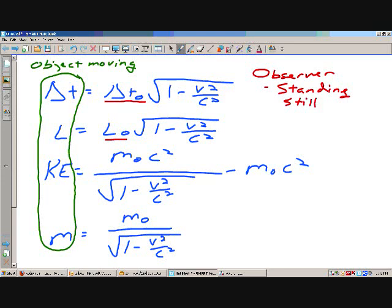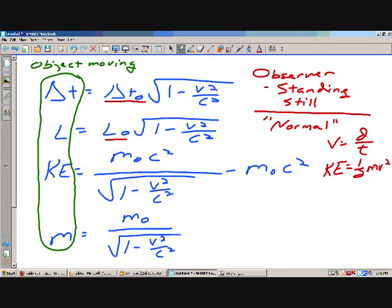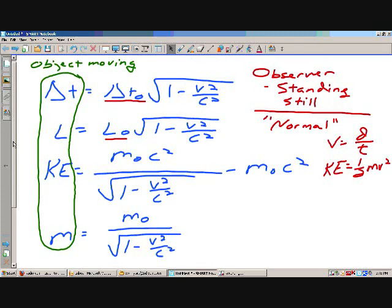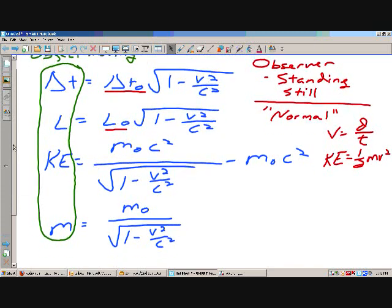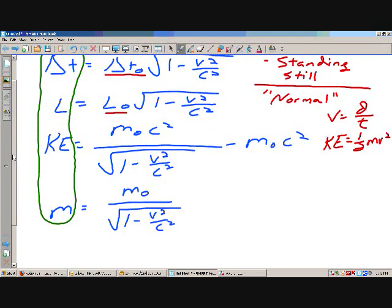Now, for the observer, keep in mind that we can use the so-called normal equations, like velocity is distance divided by time, kinetic energy is one-half mv squared, because he's not moving. We can just use those typical equations that Newton gave us. But for the object moving, we have to apply Einstein.